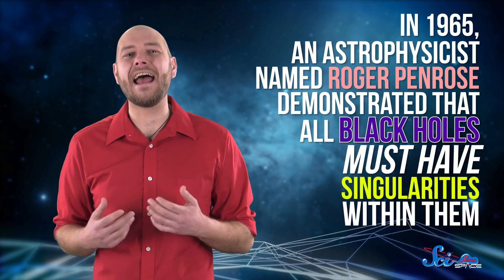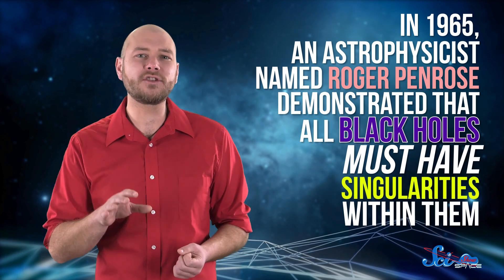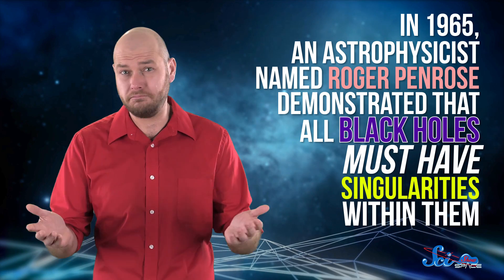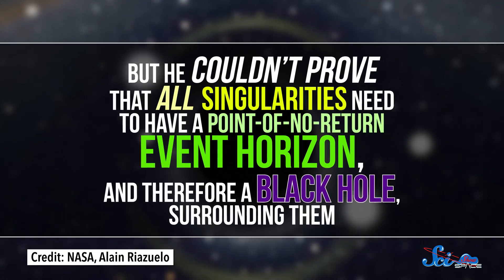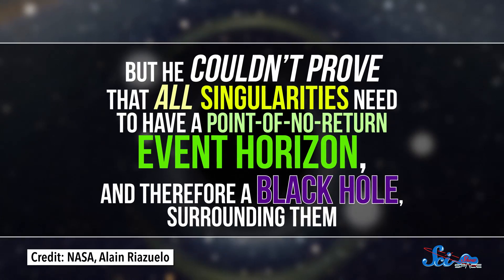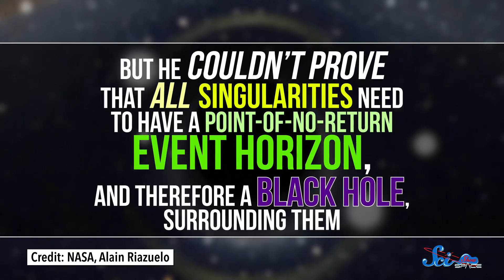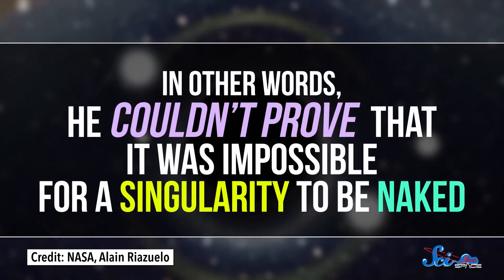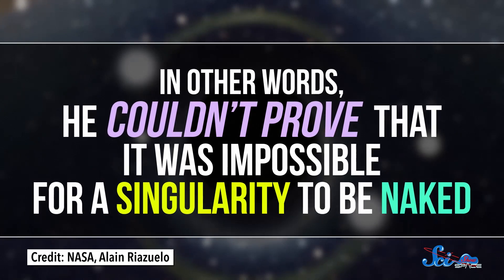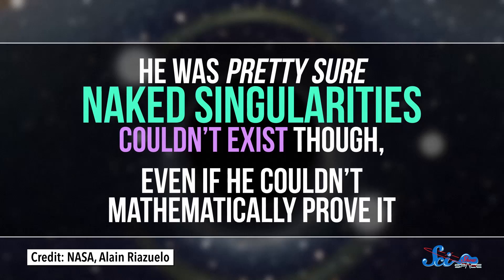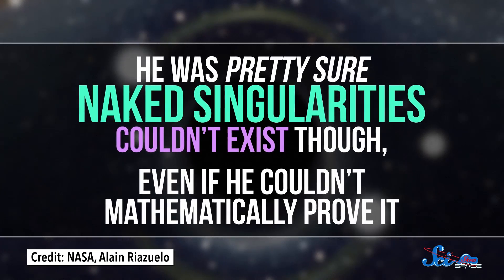In 1965, an astrophysicist named Roger Penrose demonstrated that all black holes must have singularities within them. Makes sense. But he couldn't prove that all singularities need to have a point-of-no-return event horizon, and therefore a black hole surrounding them. In other words, he couldn't prove that it was impossible for a singularity to be naked. He was pretty sure naked singularities couldn't exist, though, even if he couldn't mathematically prove it.